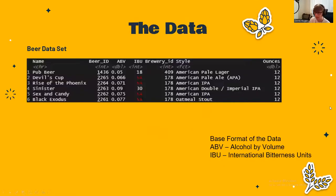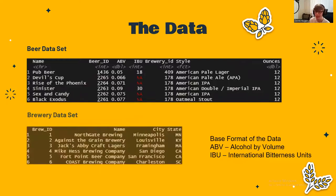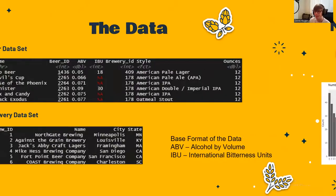Looking at the data, we have a beer name, an alcohol by volume, an international bitterness unit, a brewery ID, a style, and a number of ounces for each beer. That brewery ID is linked to a brewery name, a city, and a state.